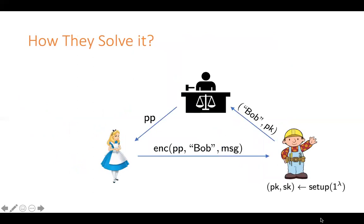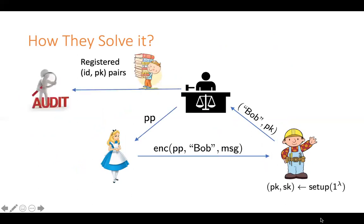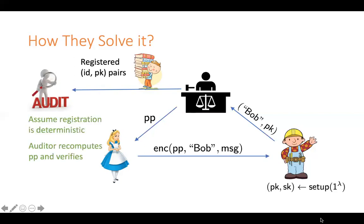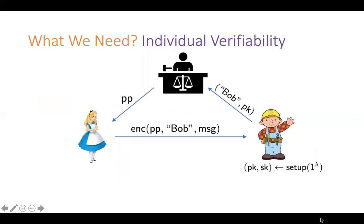That sounds like a serious issue. How does the previous paper solve this problem? They solve it by having an additional audit process. They use the fact that the registration process is deterministic — the authority doesn't need to sample any randomness. So an auditor can obtain all the identity-public key pairs from the authority and redo the entire registration process, verifying whether the authority published the right public parameters. If n users were registered in the system, the auditor takes at least order-n time to verify. All previous constructions are auditable because all of them have a deterministic registration process. But what if Bob just wants to ensure that he himself is registered honestly? Currently Bob has to run the entire audit process and spend order-n time even just to check for himself.